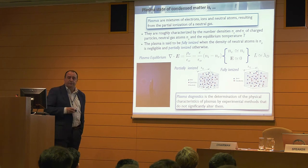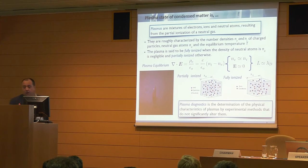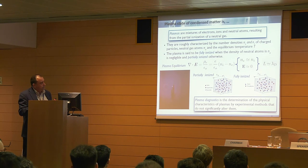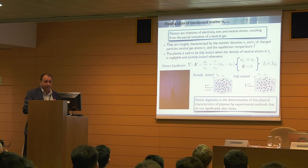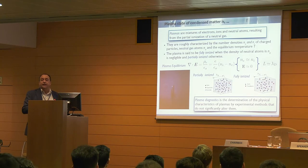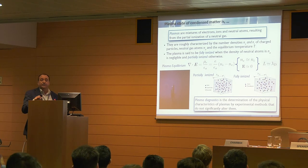We say the plasma is fully ionized when we have no neutral particles, or partly ionized otherwise. This is estimated in these two boxes. If you count the number of particles inside the boxes — the size of the boxes is typically the Debye length, which is the characteristic plasma length — the mean average length that the electric field penetrates into the plasma. If you count the number of dots in both boxes, blue and red, you will find they are exactly equal.